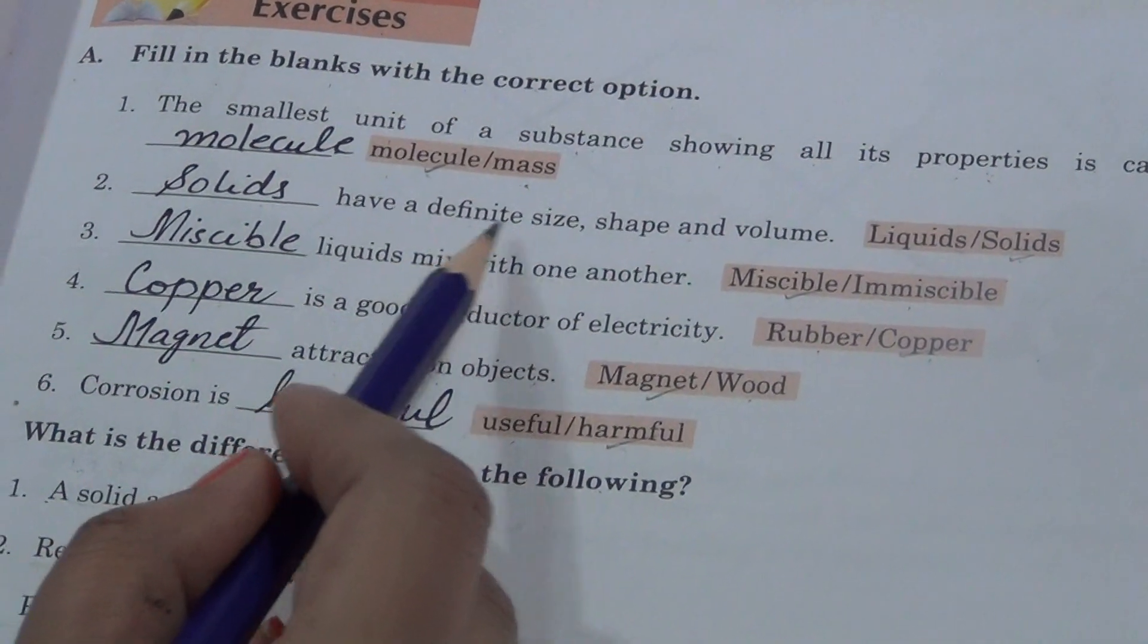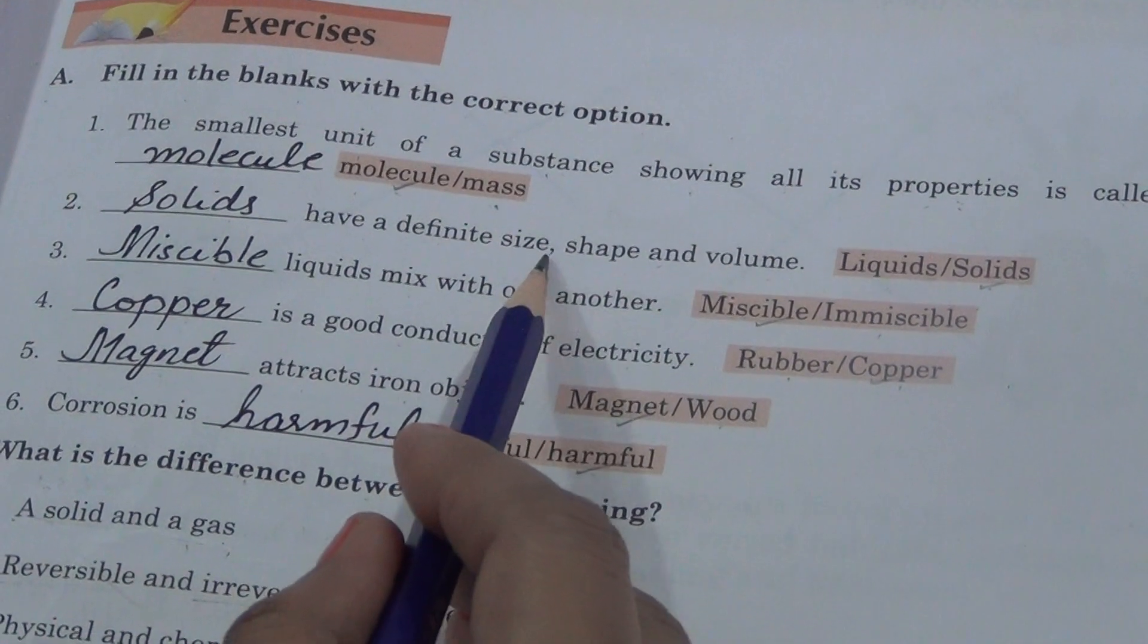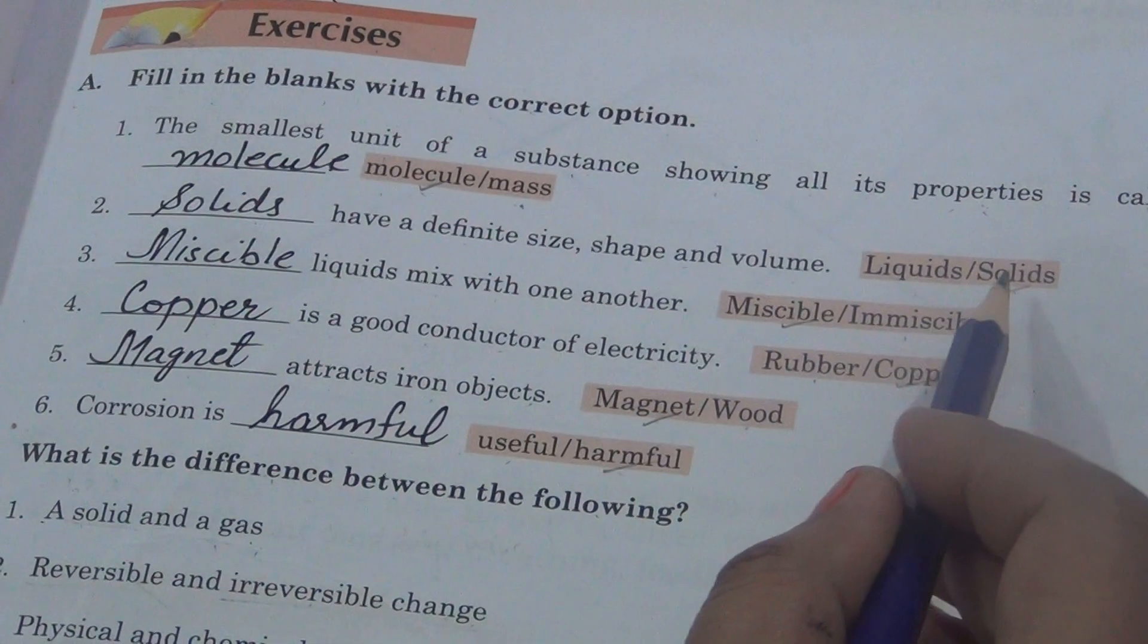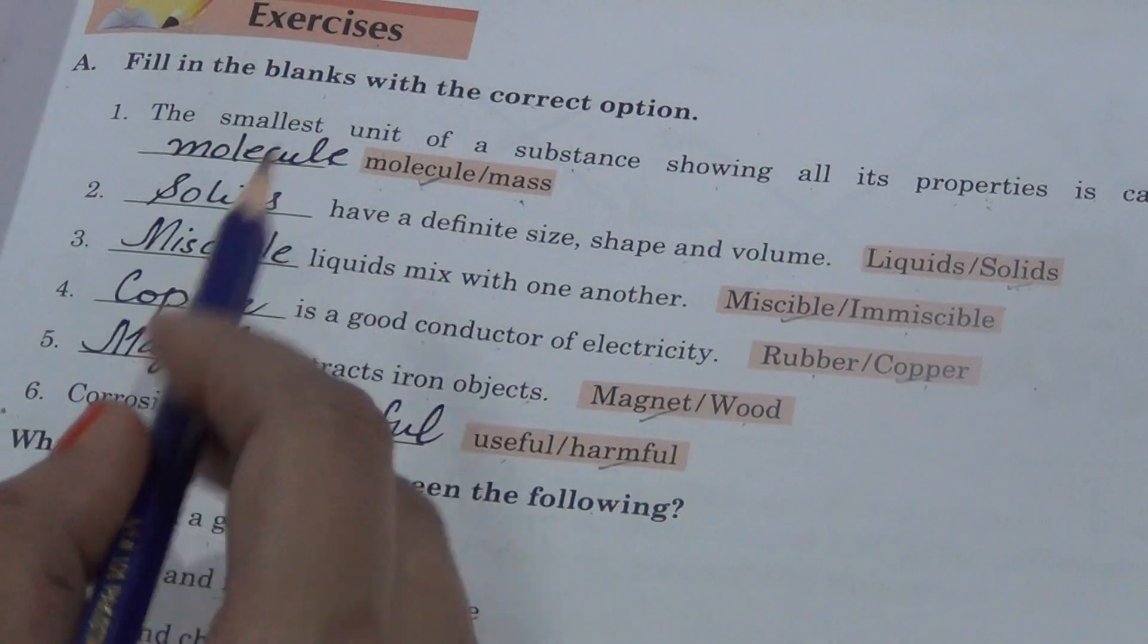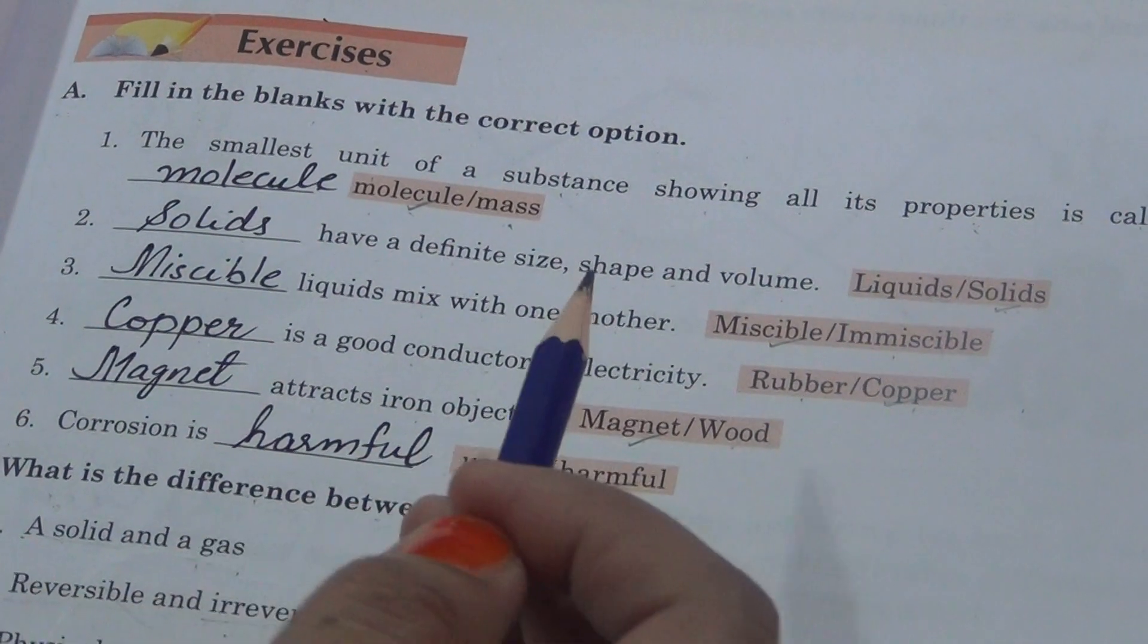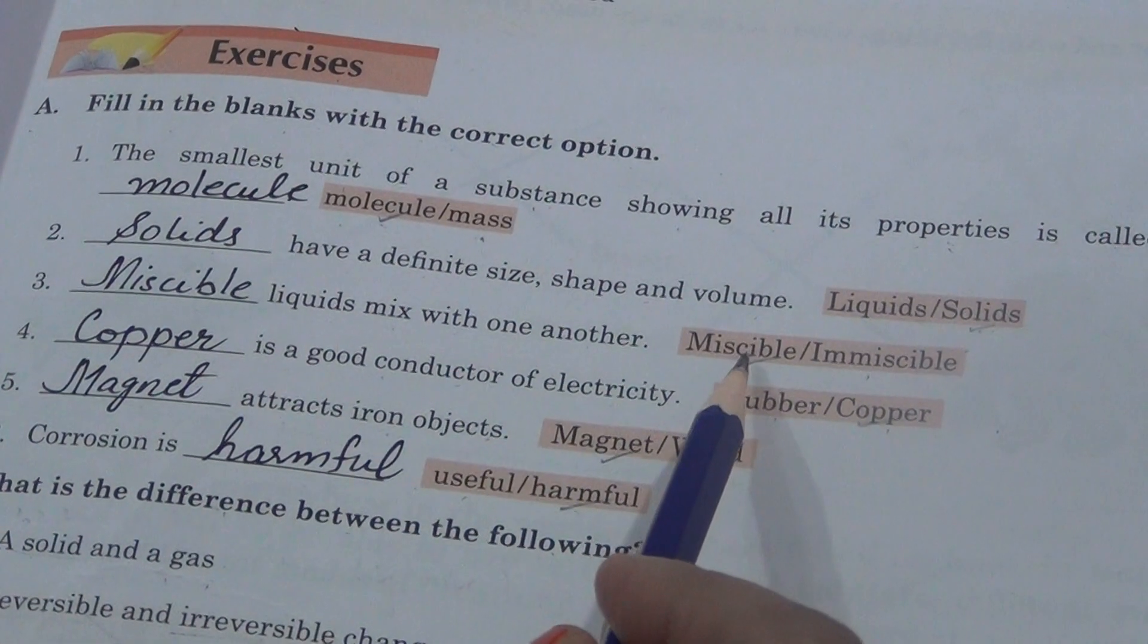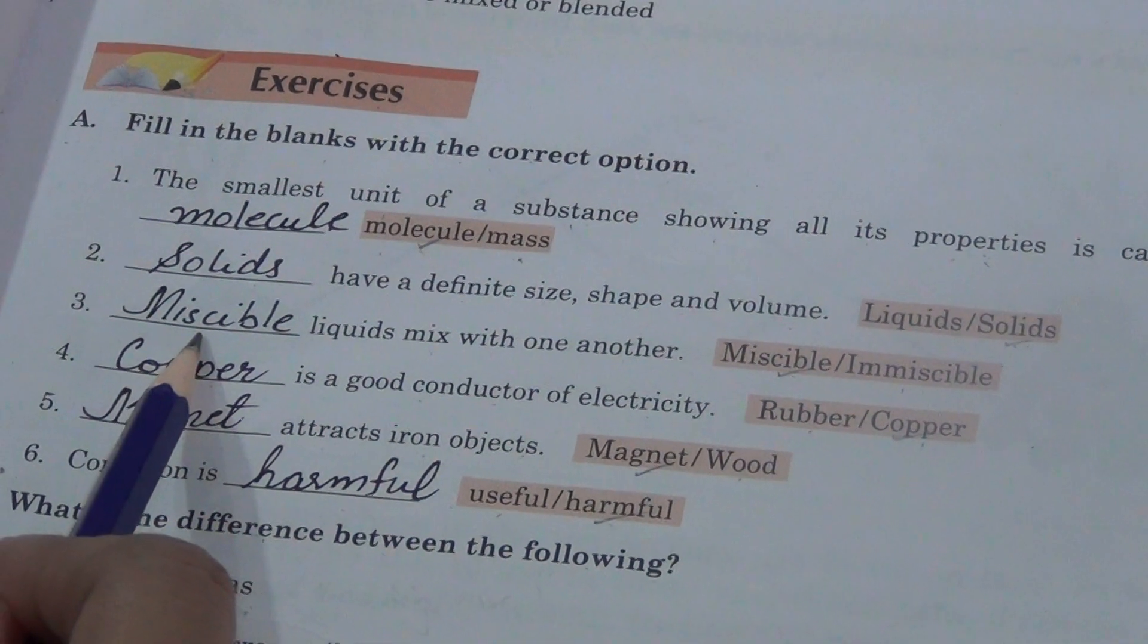Dash have a definite shape, size and volume. Liquid and solid. So you select one. Answer is solid. Dash liquids mix with one another. These are miscible and immiscible liquids. So these are miscible liquids.